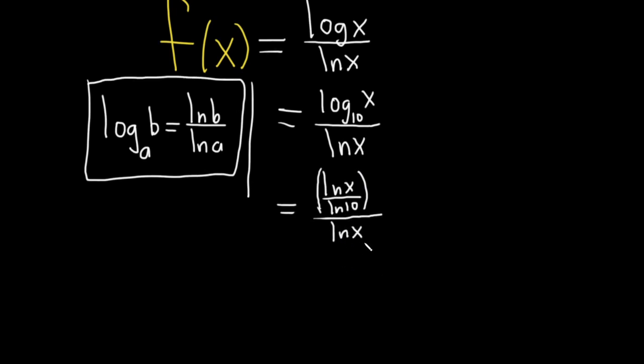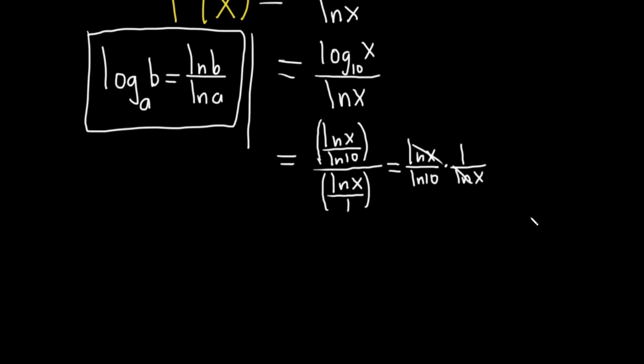And let's go ahead and carefully do the simplification here. This is equal to ln(x) over ln(10). That's what we have. But it's all being divided by the natural log of x, and so this is really the natural log of x over 1. And when you divide by something, you really multiply by the reciprocal. So this is really times 1 over the natural log of x. Beautiful, right? And these cancel.